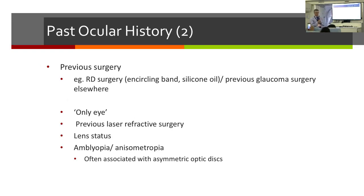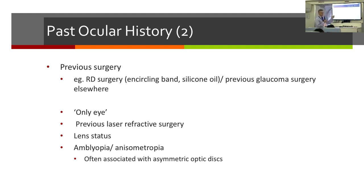It's also important to look at past ocular history. Patients who have had previous vitreoretinal surgery are more at risk of developing glaucoma. Other important factors include whether it is the patient's only eye, whether they've had previous laser refractive surgery, and whether they are pseudophakic, phakic, or aphakic. In children, it is important to look for amblyopia and anisometropia, as these are often associated with asymmetric optic disc appearance.